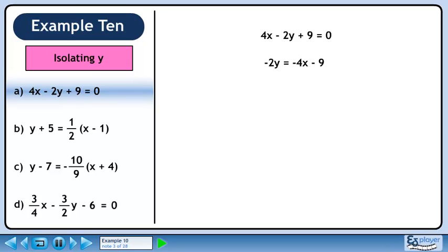Bring the 4x and the 9 over to the other side, changing their signs. Divide both sides of the equation by minus 2 to isolate y. Reducing the fractions gives us our final answer, y equals 2x plus 9 over 2.